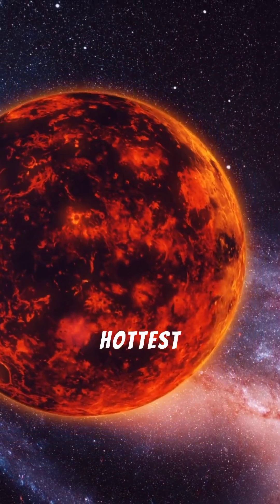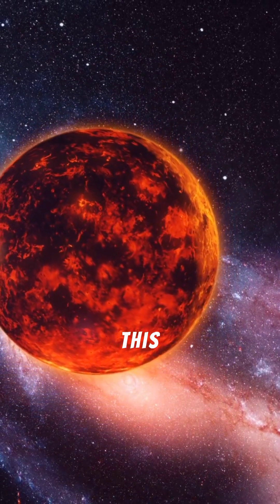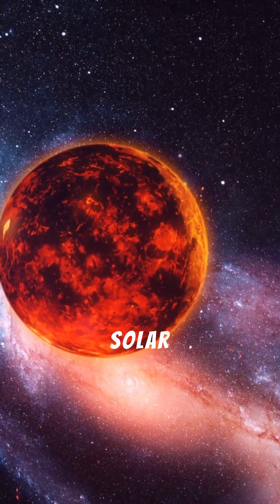Surprisingly, it's not the hottest planet in our solar system. But why? Mercury lacks a significant atmosphere to trap heat. This absence creates one of the most extreme temperature swings in the entire solar system.